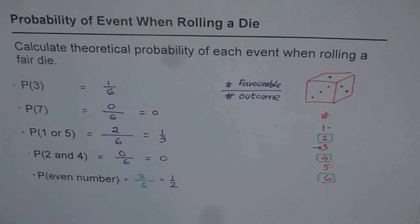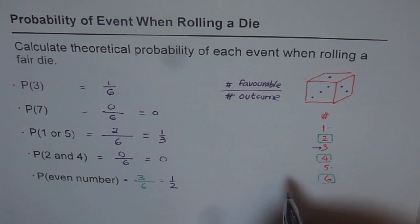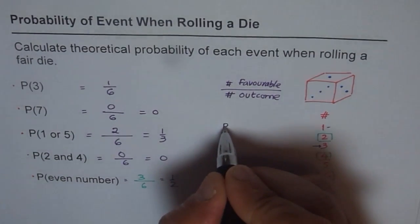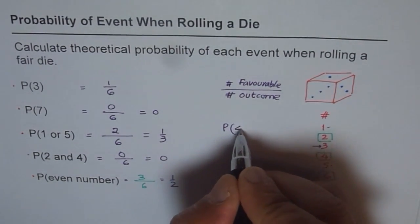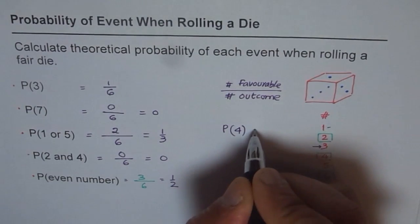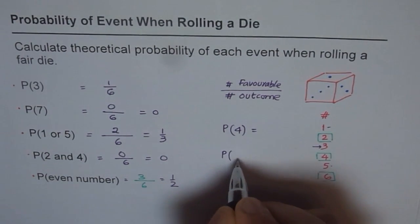So this is how we solve problems related to probability, rather theoretical probability of rolling a die. So this is how we should do it. So I hope you've understood. And you can try similar examples. For example, you can find what is the probability of rolling, let's say, 4. And what is the probability of rolling odd numbers?